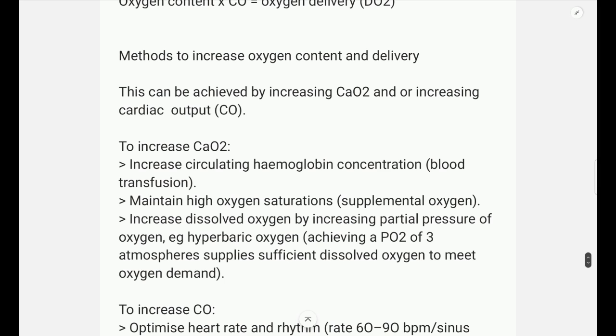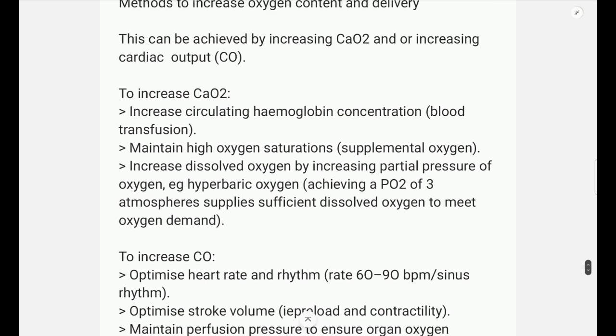Now we will discuss what are the methods to increase oxygen delivery. It can be either increased by increasing the oxygen content or it can be increased by increasing the cardiac output. Now to increase the oxygen content, you can increase the circulating hemoglobin by giving blood transfusions. You can maintain high oxygen saturations by giving supplemental oxygen. Or you can increase the dissolved oxygen component by giving hyperbaric oxygen.